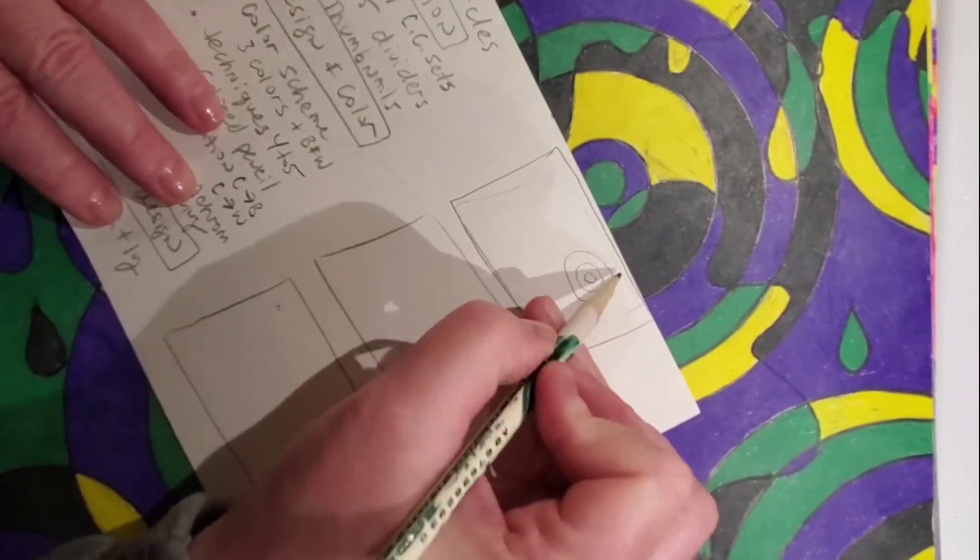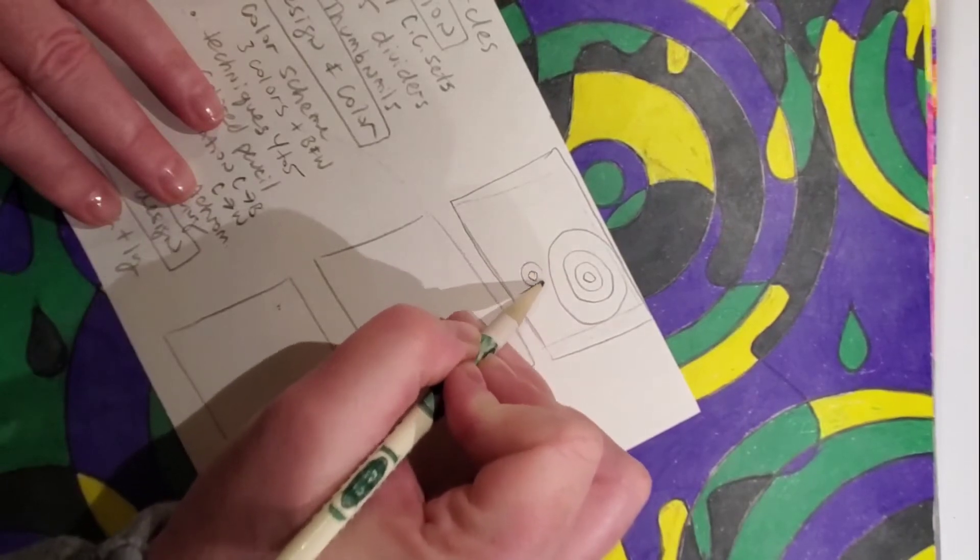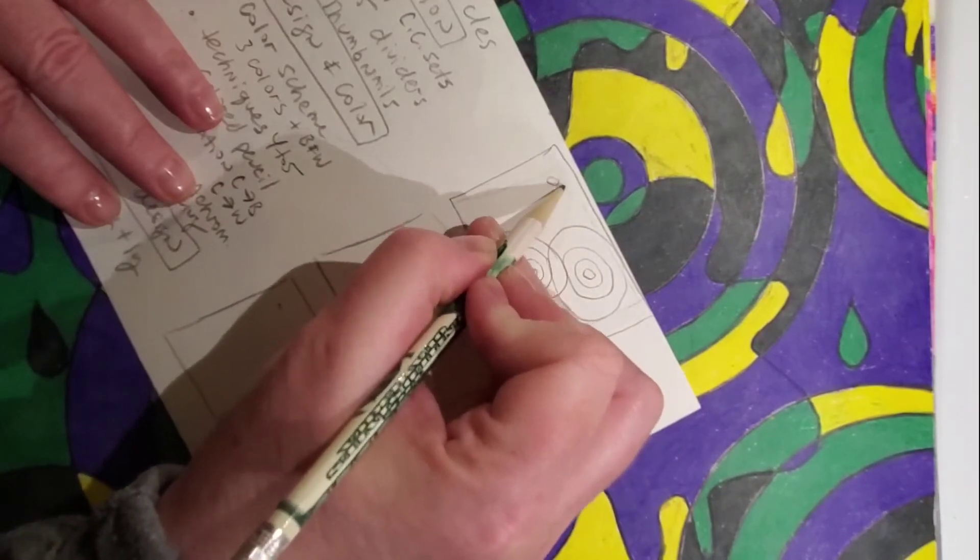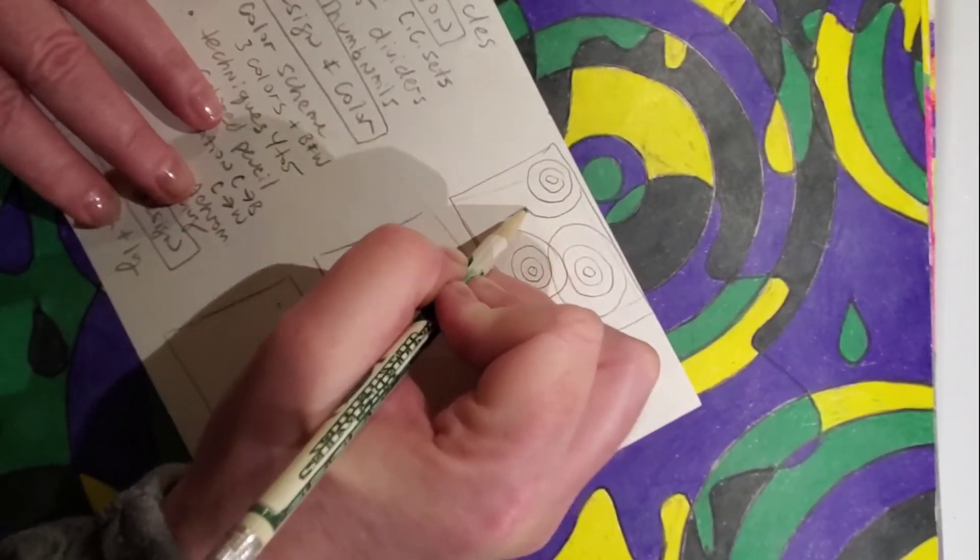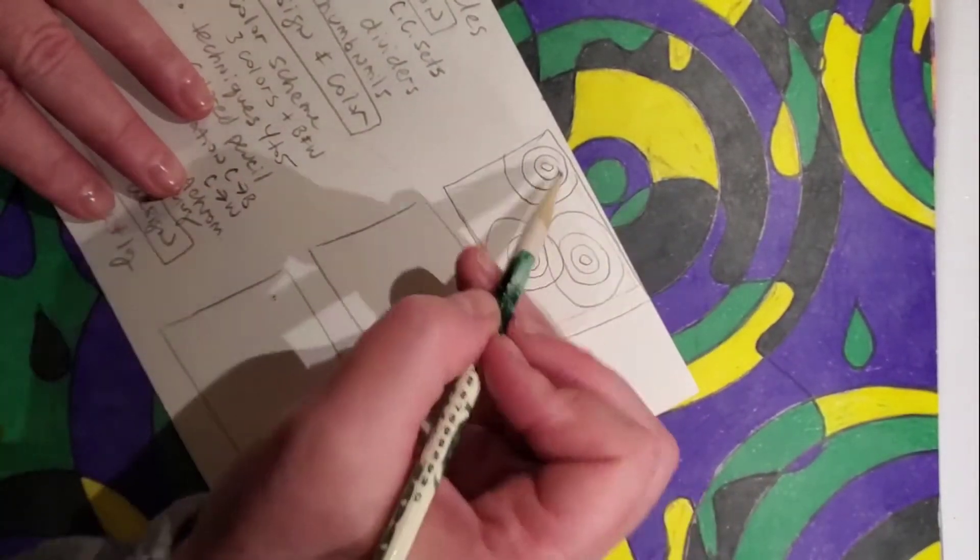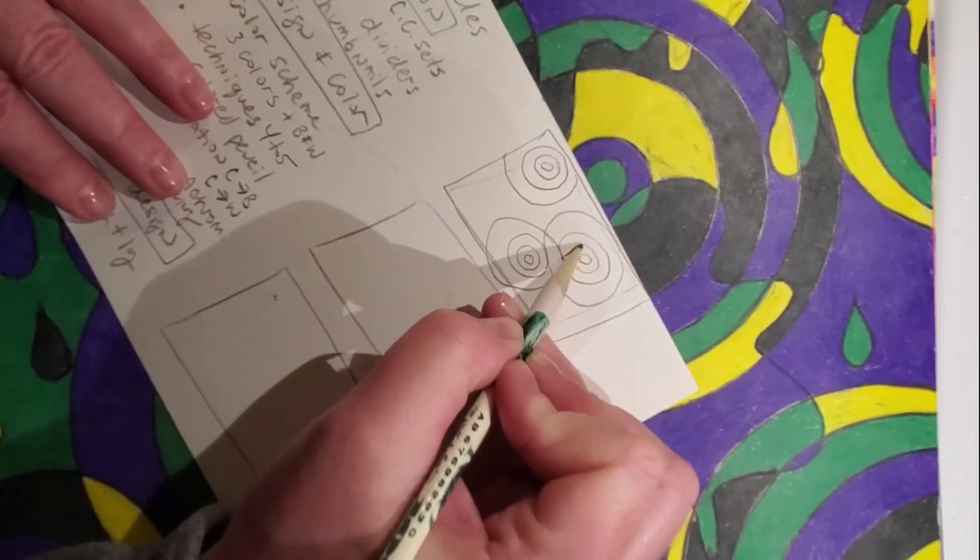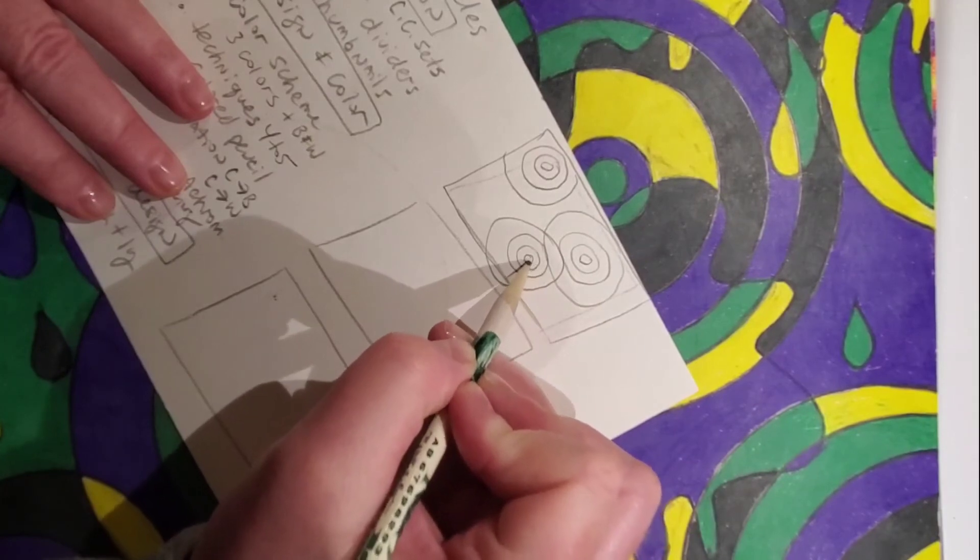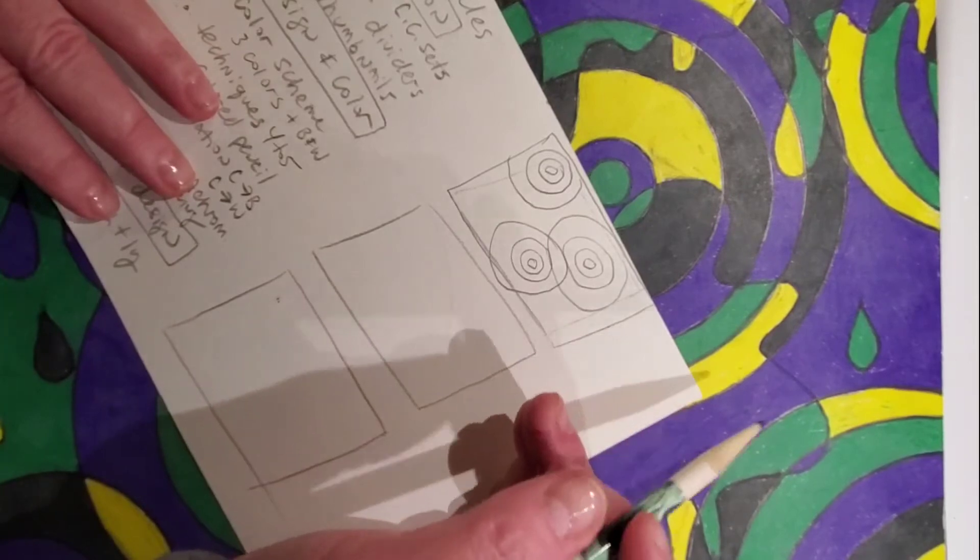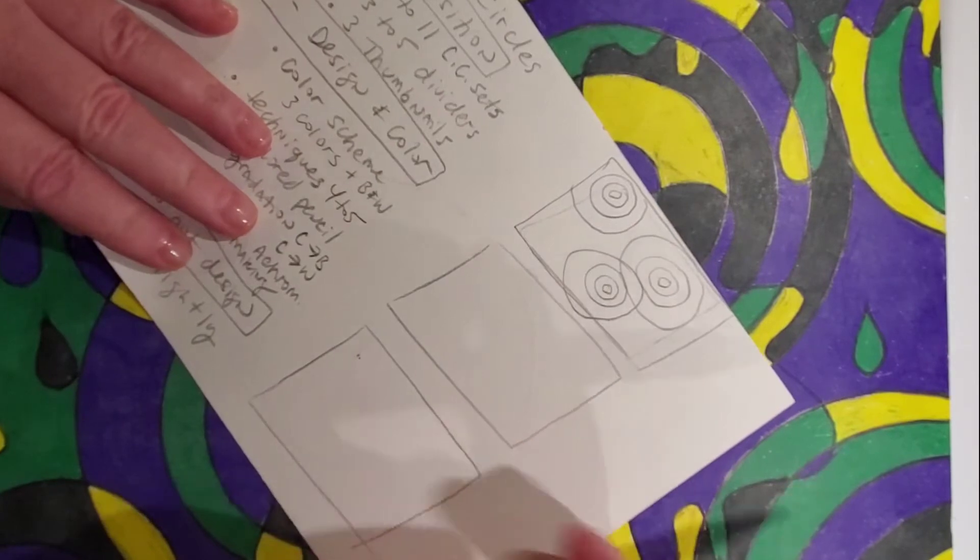It's a sketch so it doesn't have to be perfect. You could draw it pretty quickly. There's one set of circles, here's another set, this will be my third set. Now remember, I'm asking you for seven to eleven, so if you're worried about it we can count: one, two, three, four, five, six, seven, eight, nine, ten, eleven, twelve. So I have twelve, so that's definitely within the guidelines.